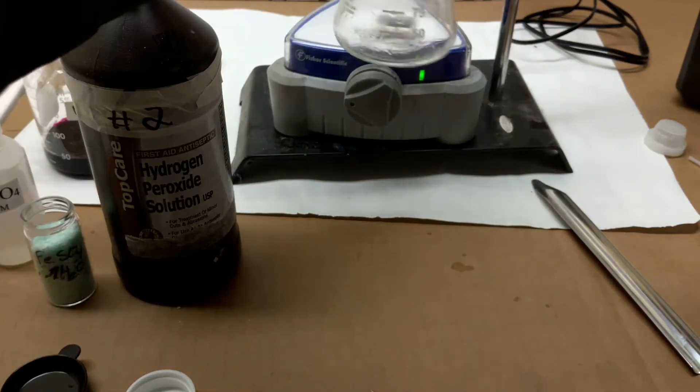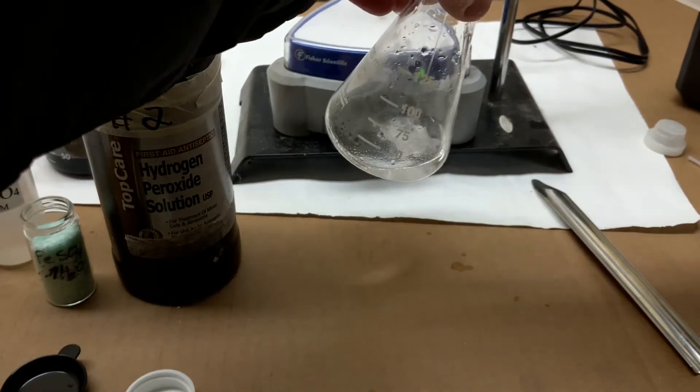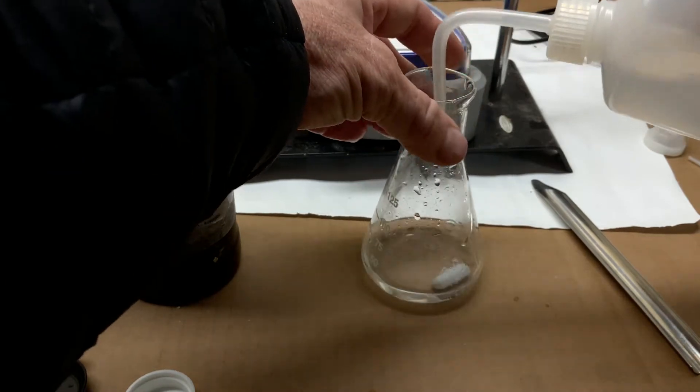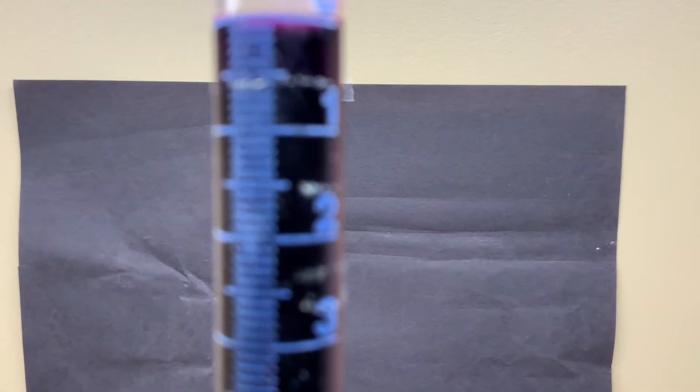Now I'll add the stir bar. Add enough water to cover the stir bar so that it can actually stir that small volume of peroxide solution.